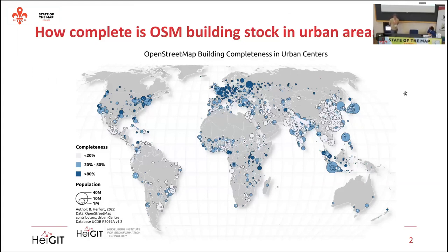We investigated around 13,000 cities — basically all cities with more than 50,000 inhabitants. This gives you the global distribution. We see familiar patterns: a north-south difference, with more complete mapping in Europe and Northern America and less in other parts of the world. But one interesting fact is that no matter which continent you look at, you will always find well-mapped cities, which is encouraging.